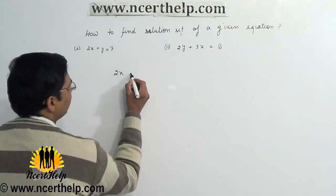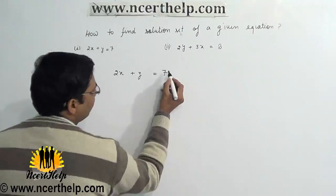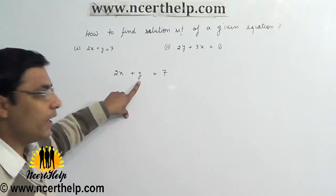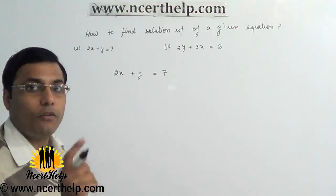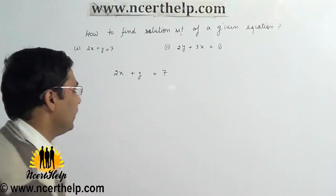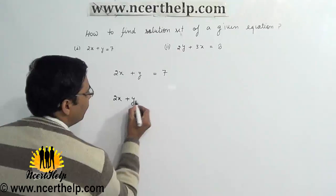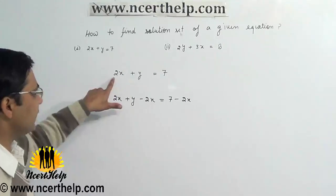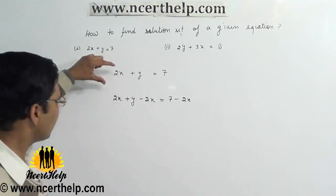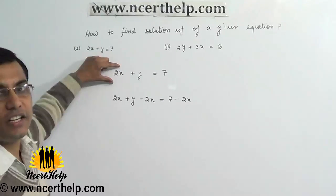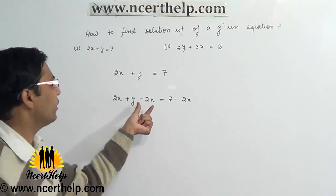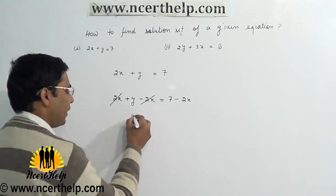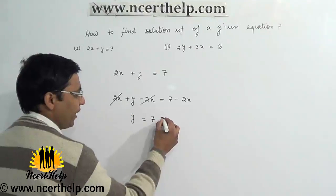Here the coefficient of x is 2 and the coefficient of y is 1. Since 2 is greater than 1, the coefficient of x is greater. In that case, we will subtract 2x from both sides because the coefficient of x is higher. After subtracting 2x from both sides, 2x cancels out and we get y equals 7 minus 2x.